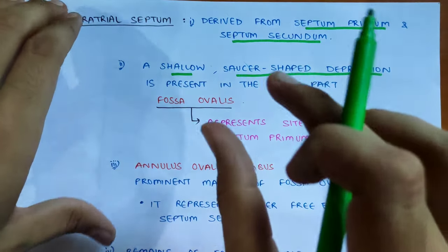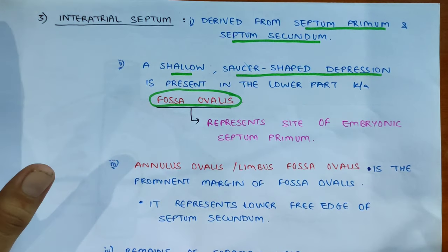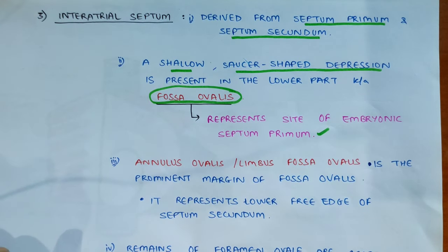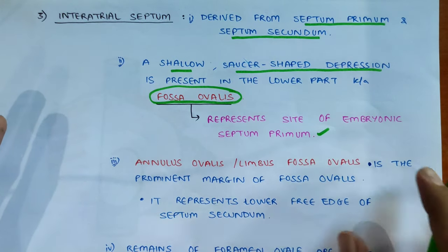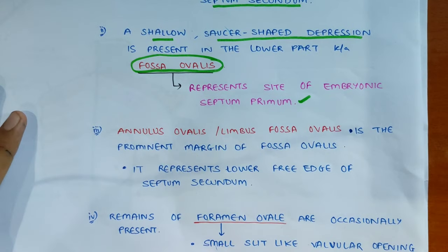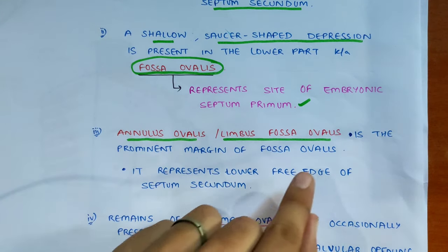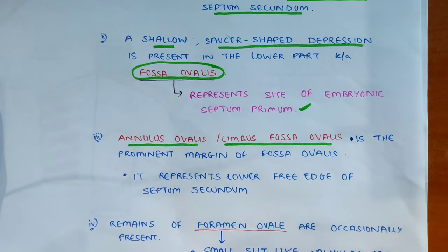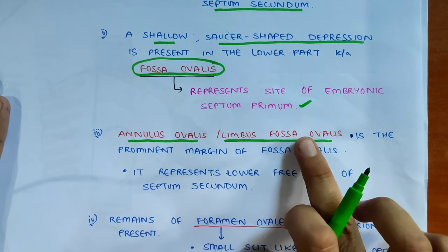There is a little depression present on the interatrial septum which is called the fossa ovalis. It represents the site of the embryonic septum primum, which was the first septum present. The fossa ovalis has a prominent margin called the limbus fossa ovalis, also known as the annulus ovalis, and it is present on the interatrial septum.